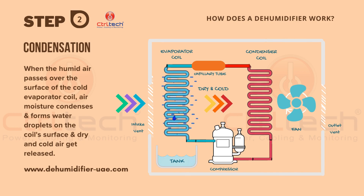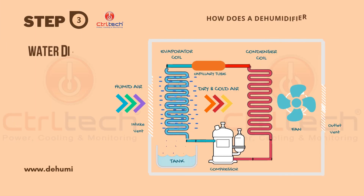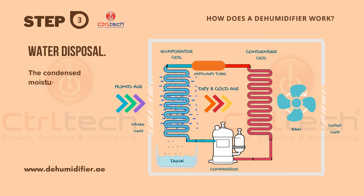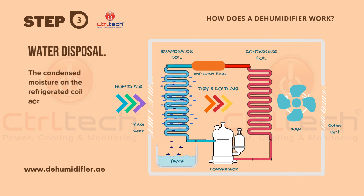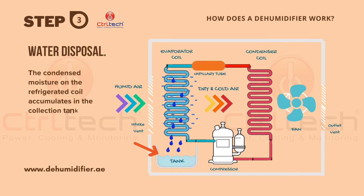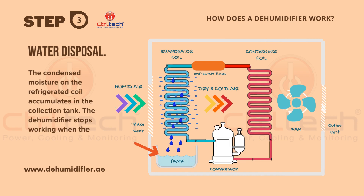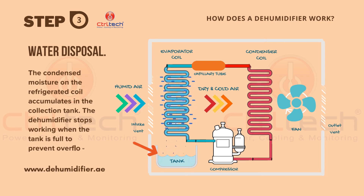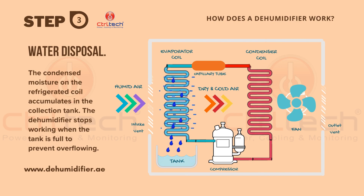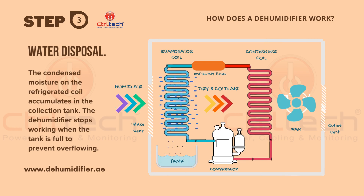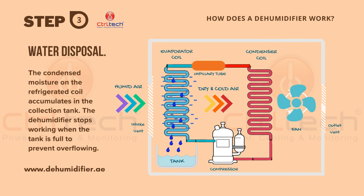The water which condensed on the evaporator coil surface gets accumulated into a tank called the condensate tank. When the tank gets full, the dehumidifier gives a tank-full indication and asks the user to empty the tank, and at the same time it stops working to avoid overspilling of water. Many dehumidifiers also have a facility to connect a hose pipe for continuous drainage to avoid the need to manually empty the tank.